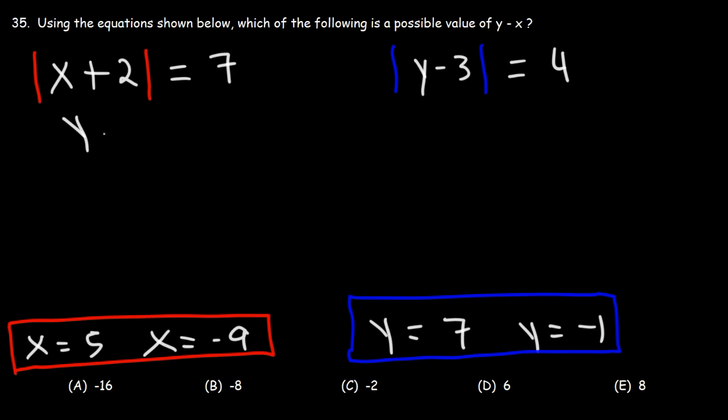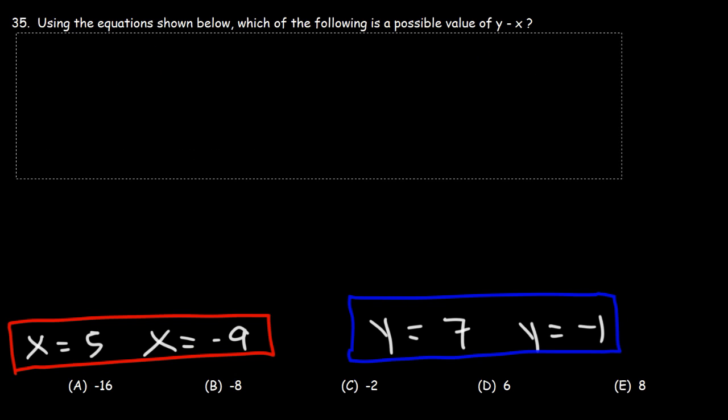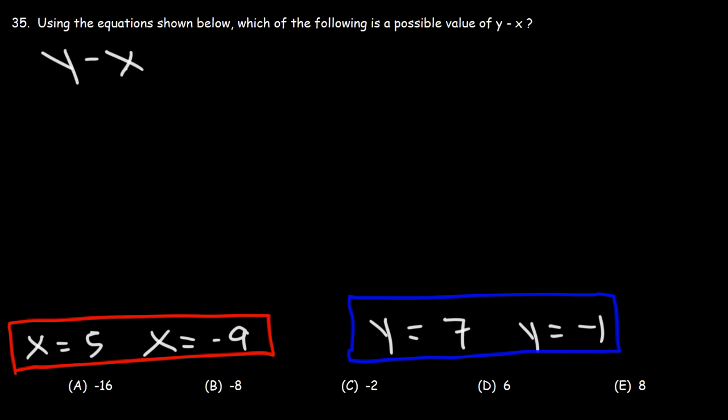Now, let's evaluate the expression y minus x. So y could be 7, and when y is 7, x could be 5. 7 minus 5 is 2. That's one possible answer.